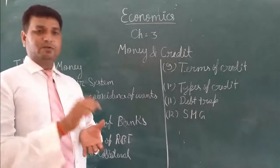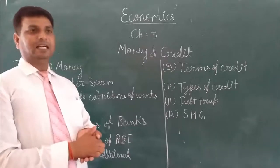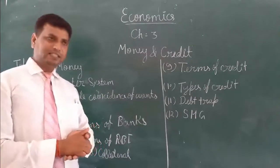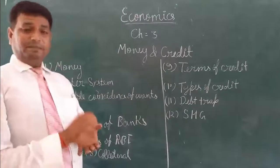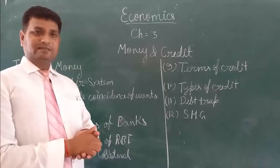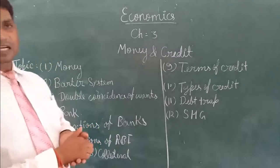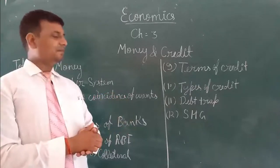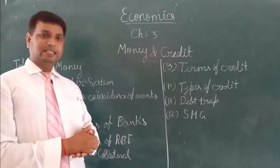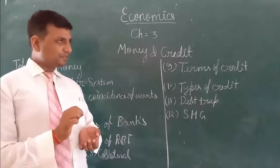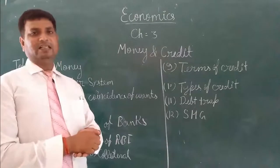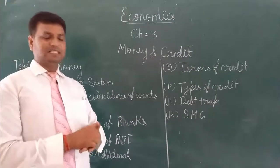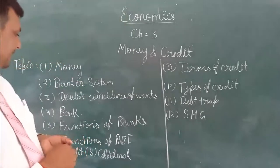Formal source of credit is very important for the development of borrowers and the country also, because it helps in the infrastructure development of the country. Formal source credit charges a low rate of interest and is supervised by the RBI. But in informal source, there is no agency which can check the credit activities, so they exploit the borrowers. The problem is that most poor people still depend on the informal source of credit because they lack collateral.